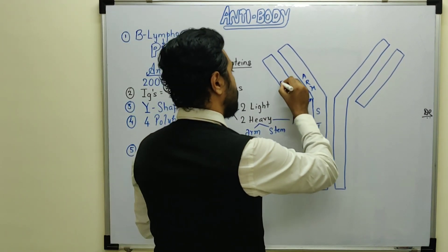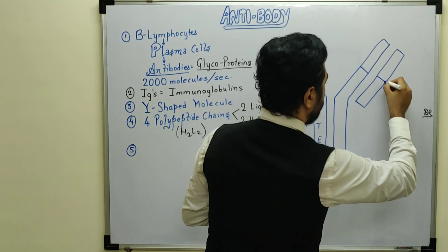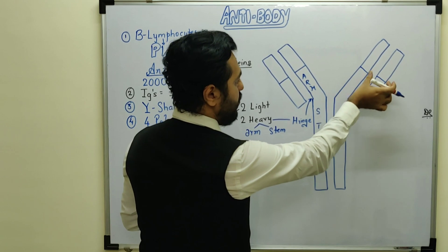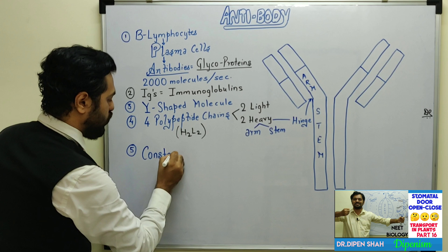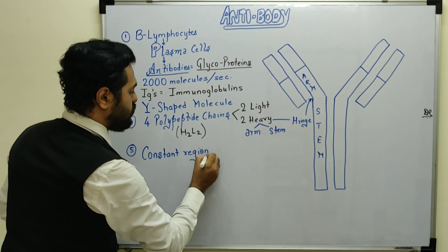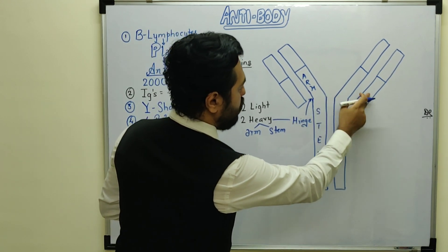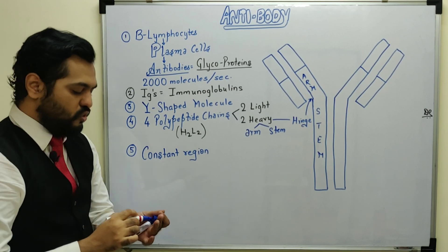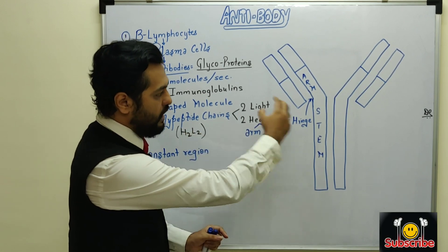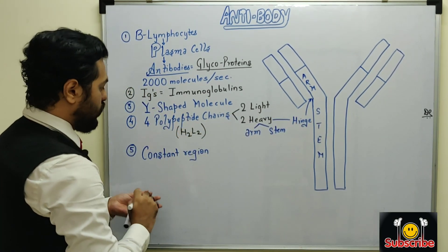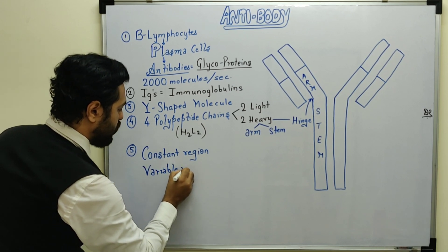Any polypeptide chain, whether light or heavy, has certain regions. The lower portion is called the constant region. Each chain has a constant region - constant region of light chain, constant region of heavy chain. They all are similar with no differences.